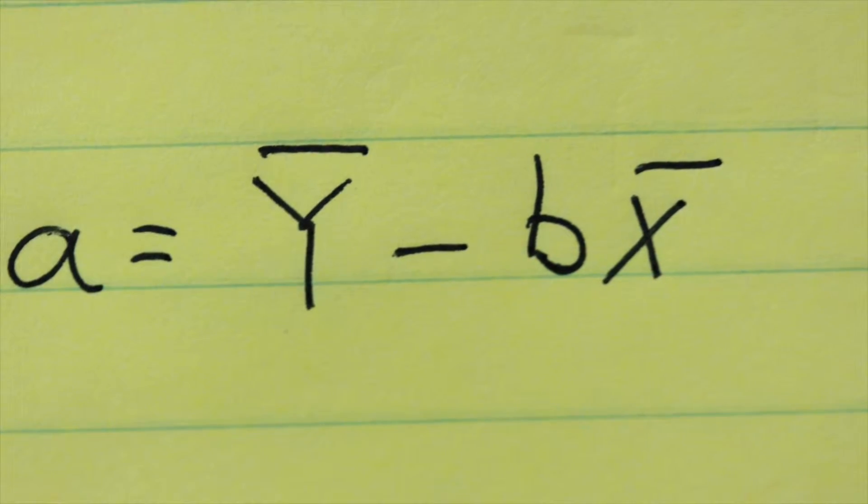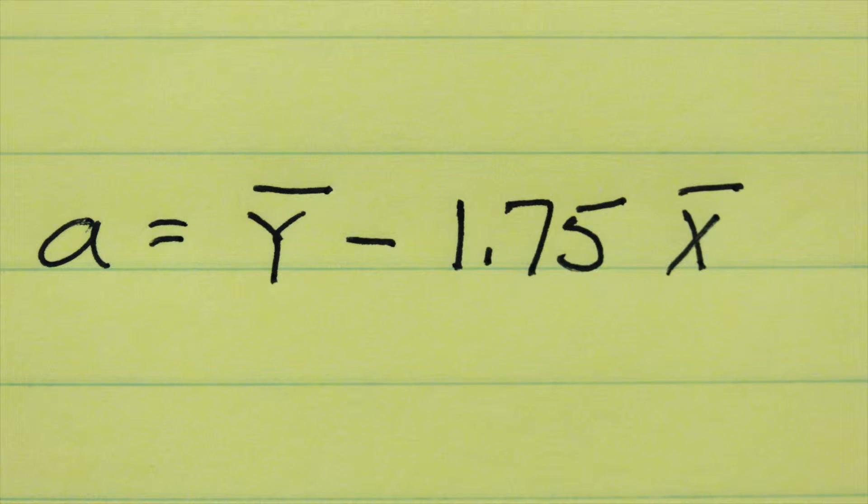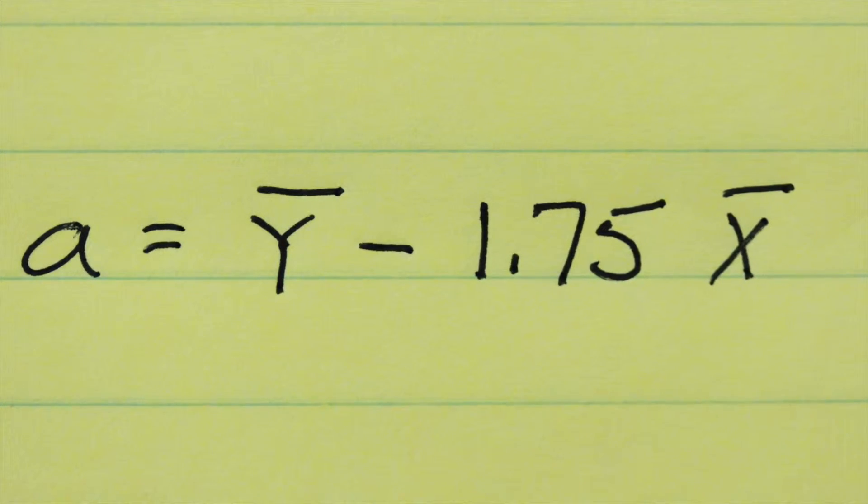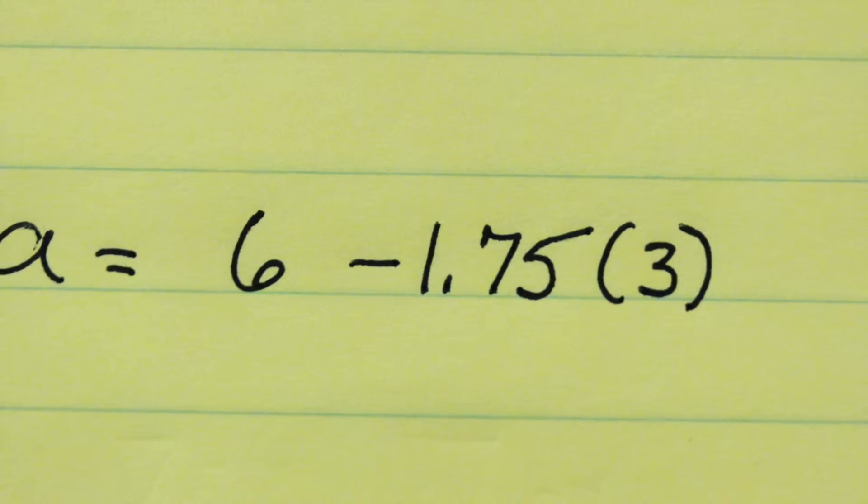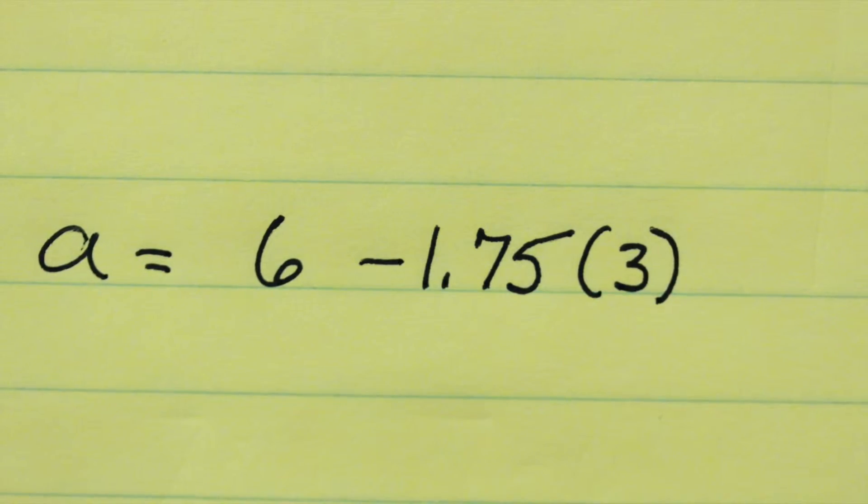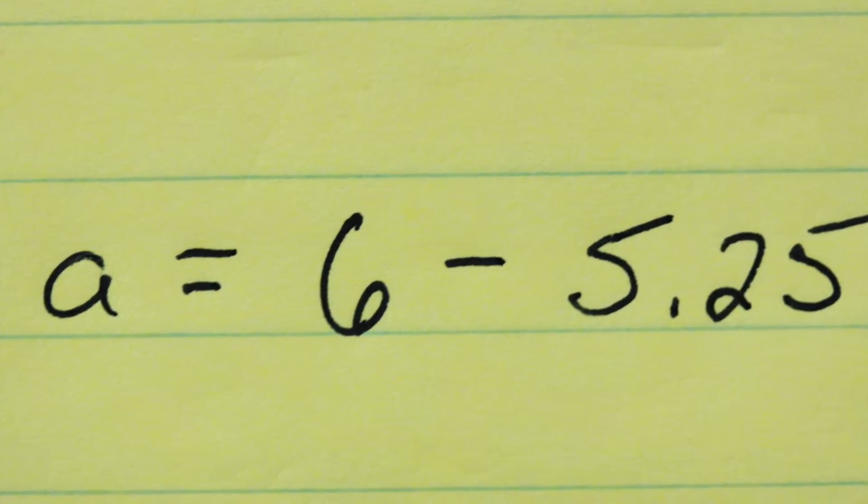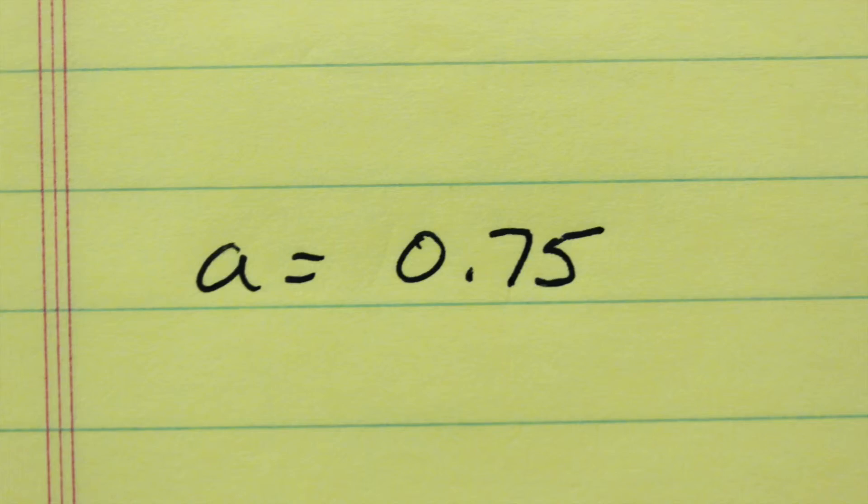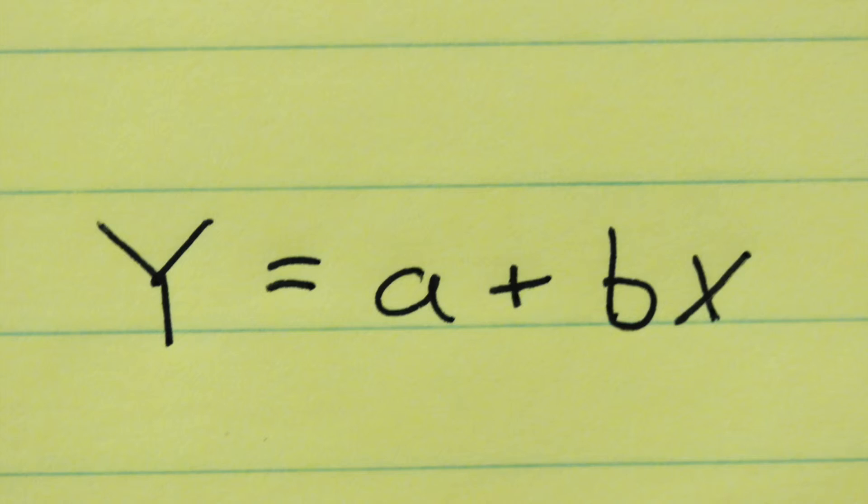We now turn to a. A is equal to the average value of y minus b, the 1.75 we just calculated, times the average value of x. Now we plug in those averages, and we'll have a equals 6 minus 1.75 times 3. That's going to be 6 minus 5.25, which equals 0.75. So our estimate for a, the intercept, is 0.75.